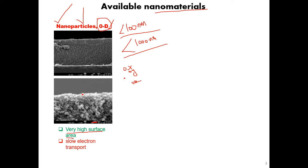Zero dimension nanoparticles have very high surface area. When we decrease the size, we increase the surface area. A good example: if you take a spoonful of sugar — in one case the sugar is small, in the other case it is large — the spoon with smaller sugar particles will dissolve faster because smaller particles have more surface area and more chances for reaction. However, zero dimension has a problem: slow electron transport, because there is a chance of recombination as electrons jump from one particle to another, reducing the net flow.